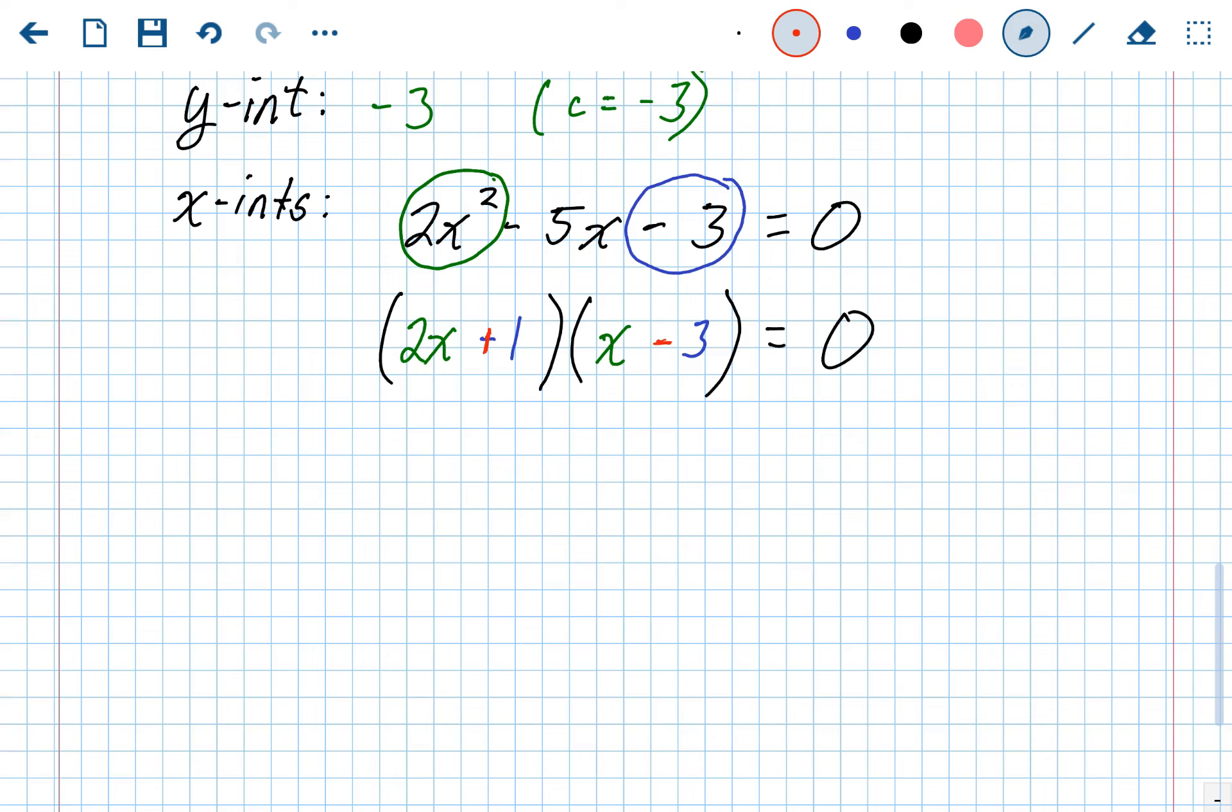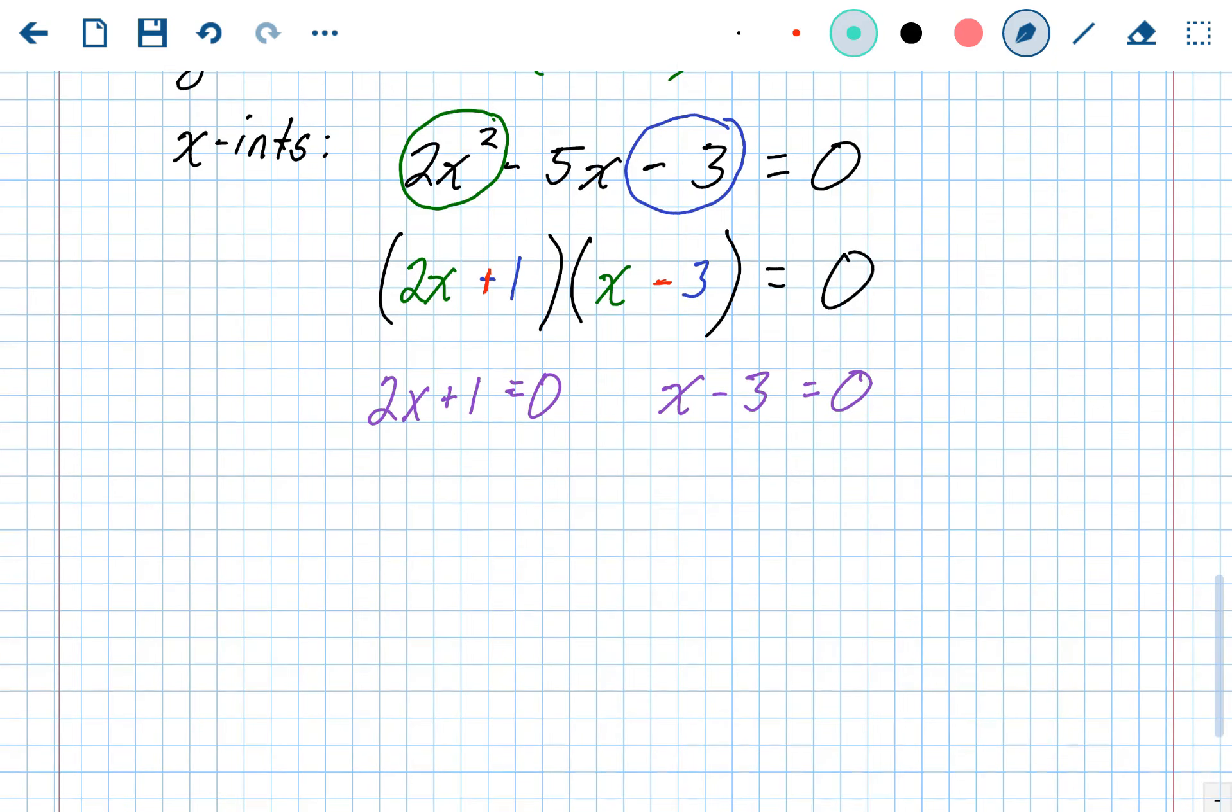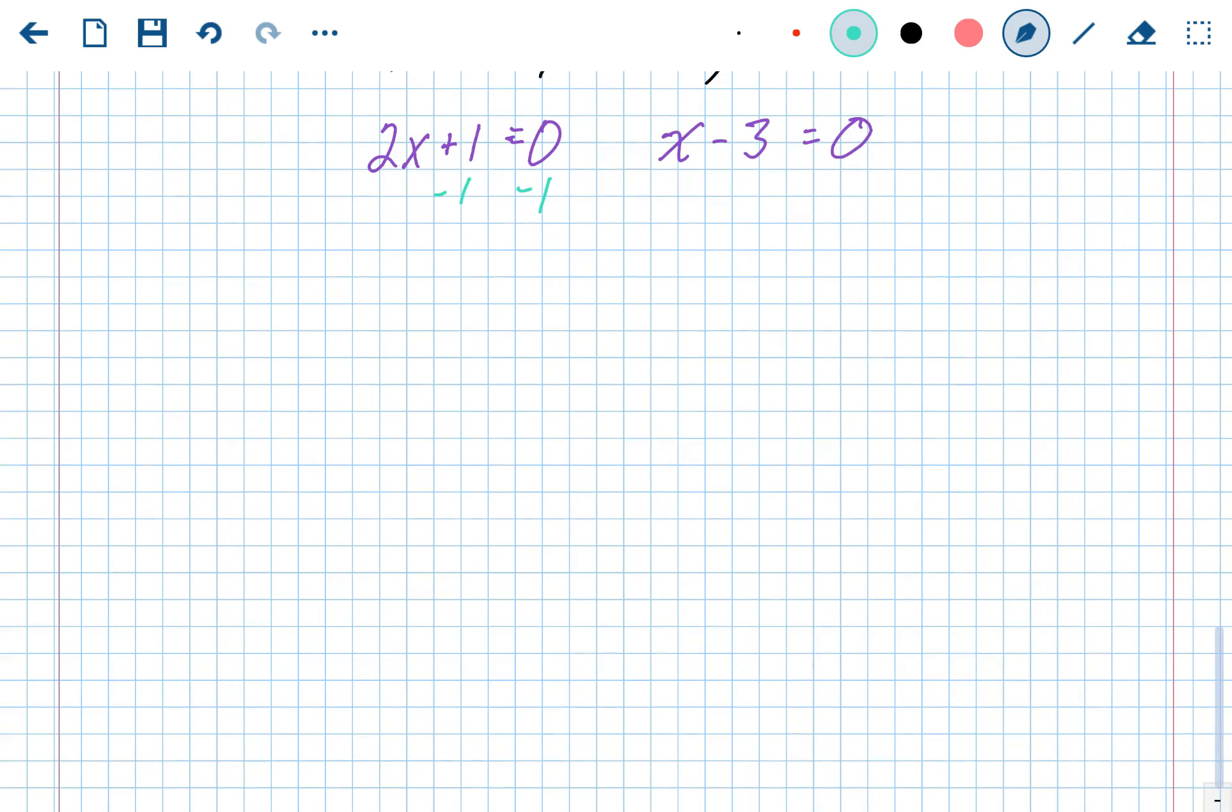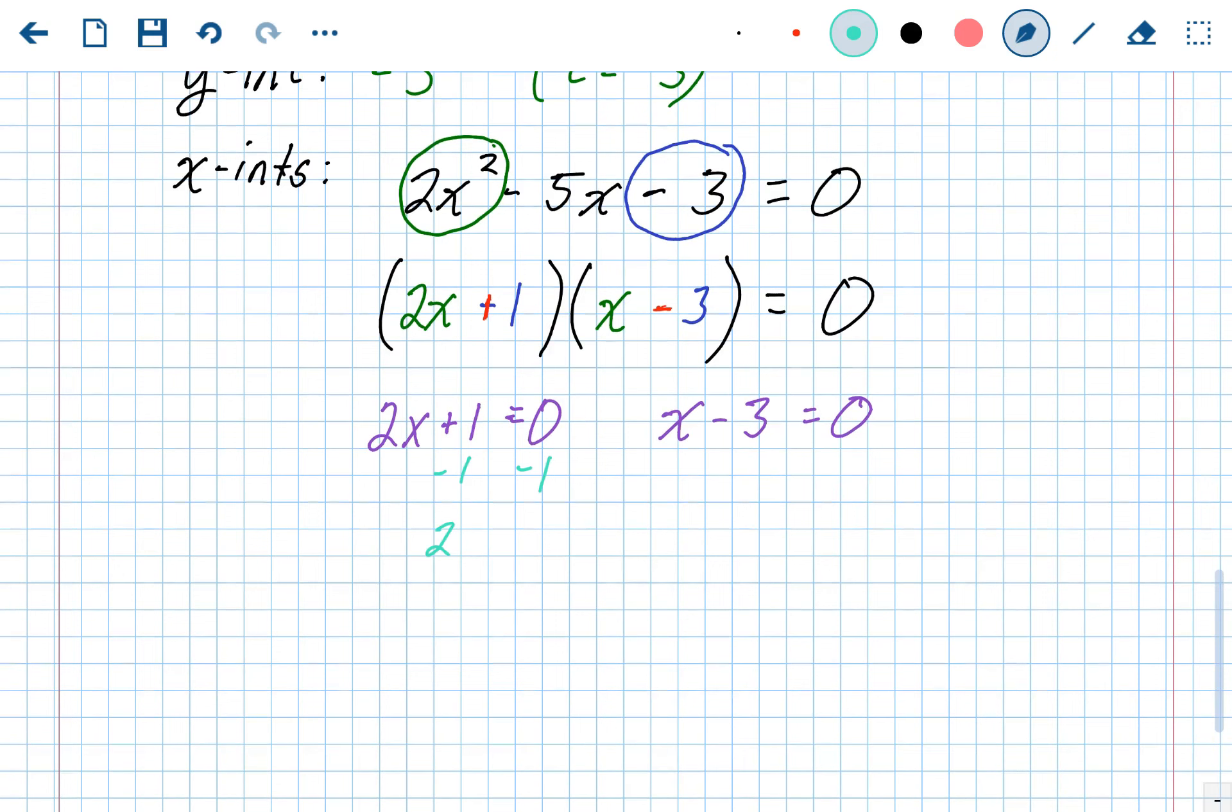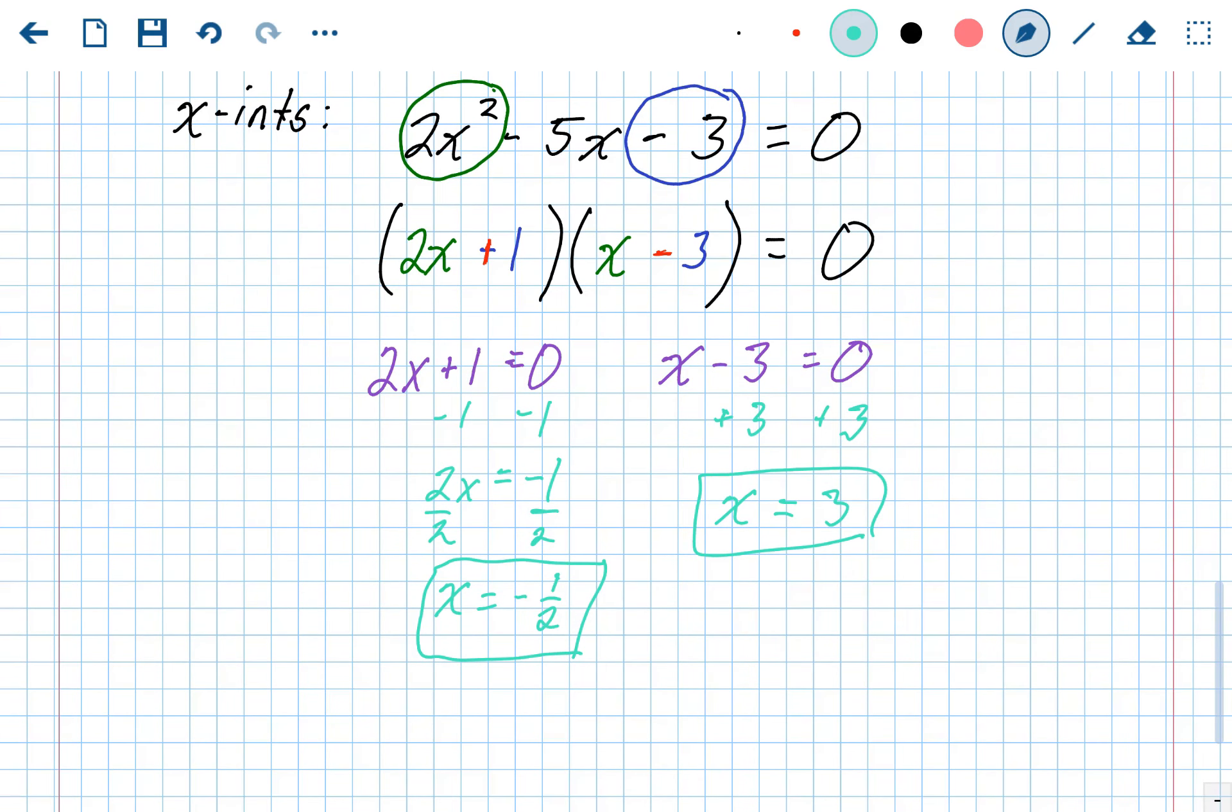Alright, so now that it's factored, how do we find the x-intercepts? Well, we're going to use the zero product property. We're going to take each one of those factors separately, set it equal to zero, and solve for x. That first one, two-step equation, subtract 1, divide by 2. And you get x equals negative 1 half. That's x-intercept number 1. That's solution number 1. The other side, x minus 3 equals 0. One-step equation. Add 3 to both sides. So your second x-intercept is x equals 3. So your x-intercepts are negative 1 half and positive 3.